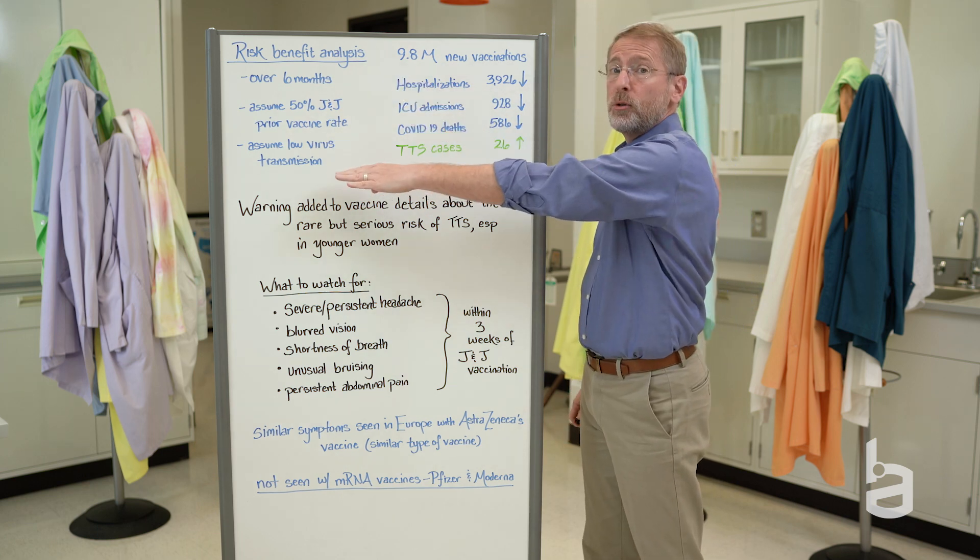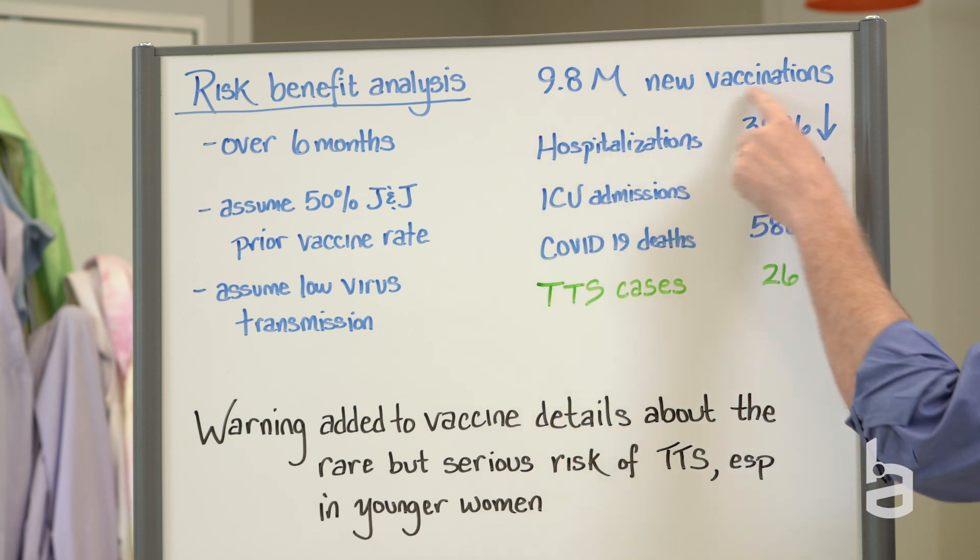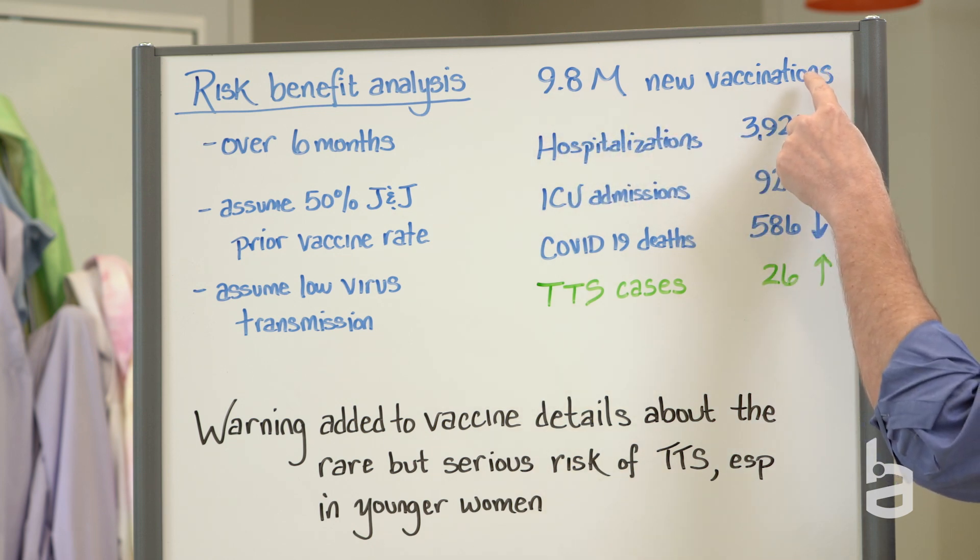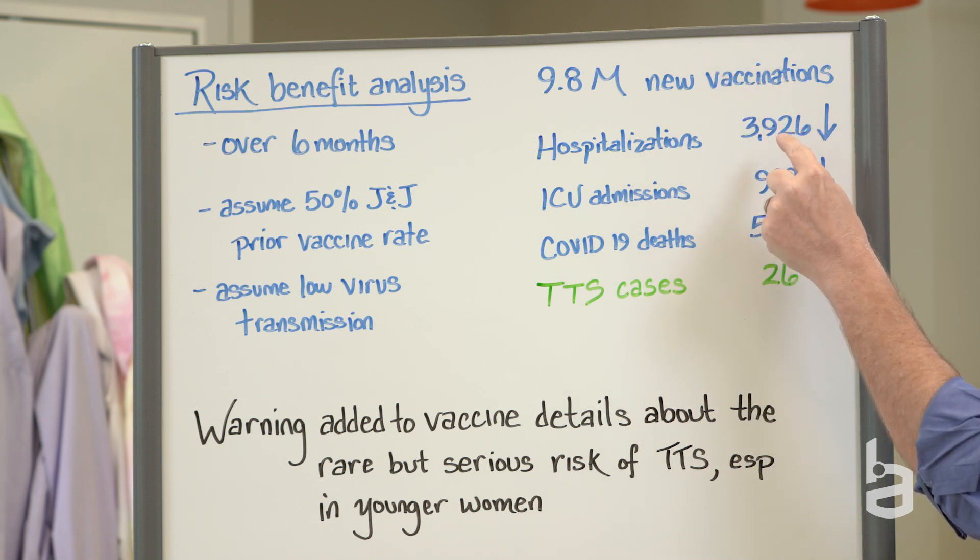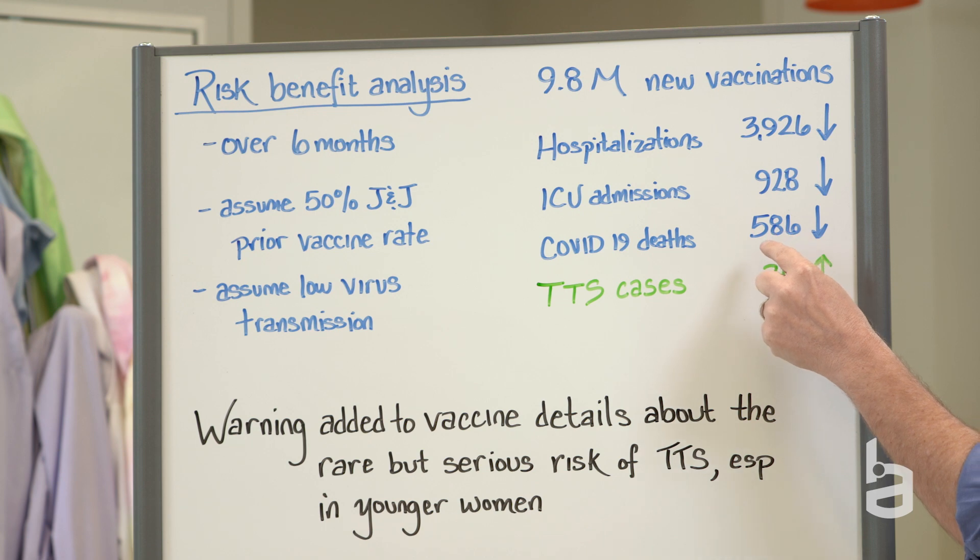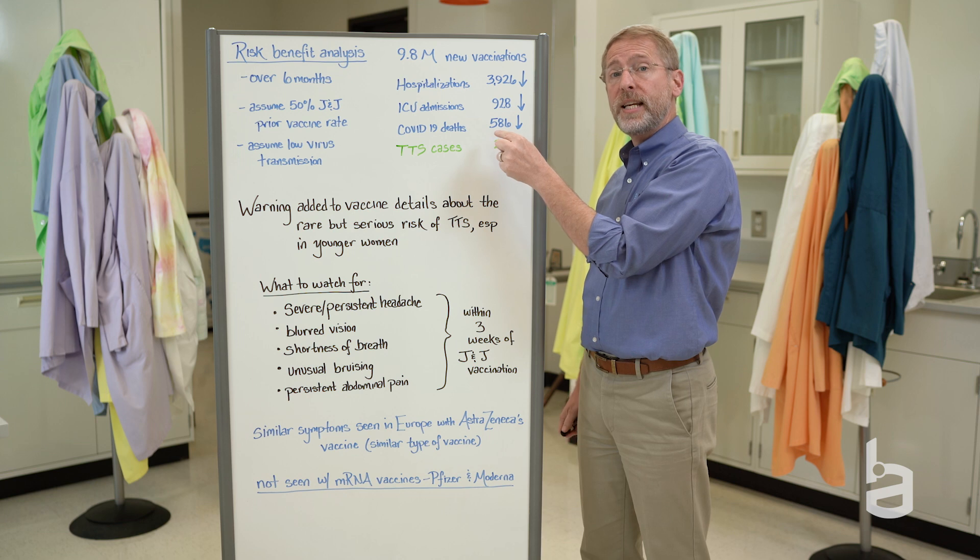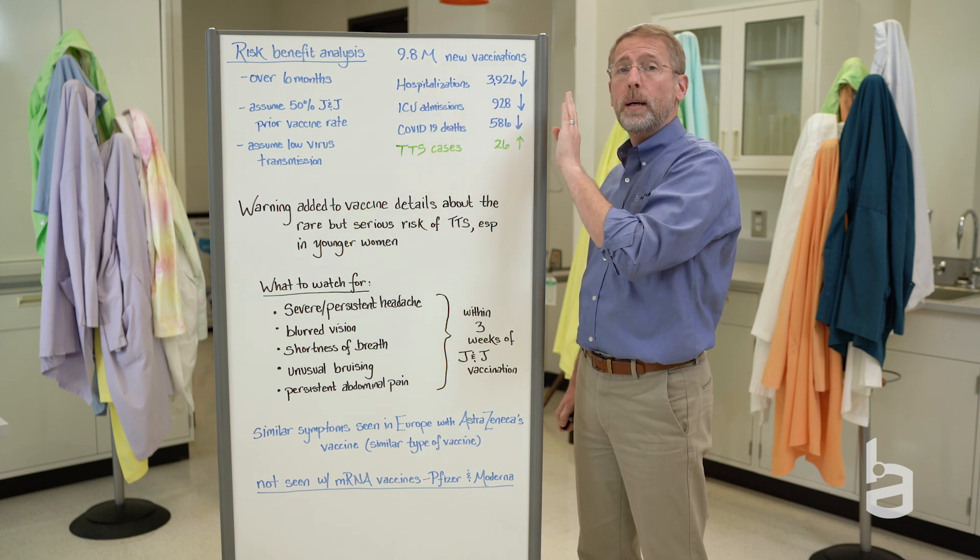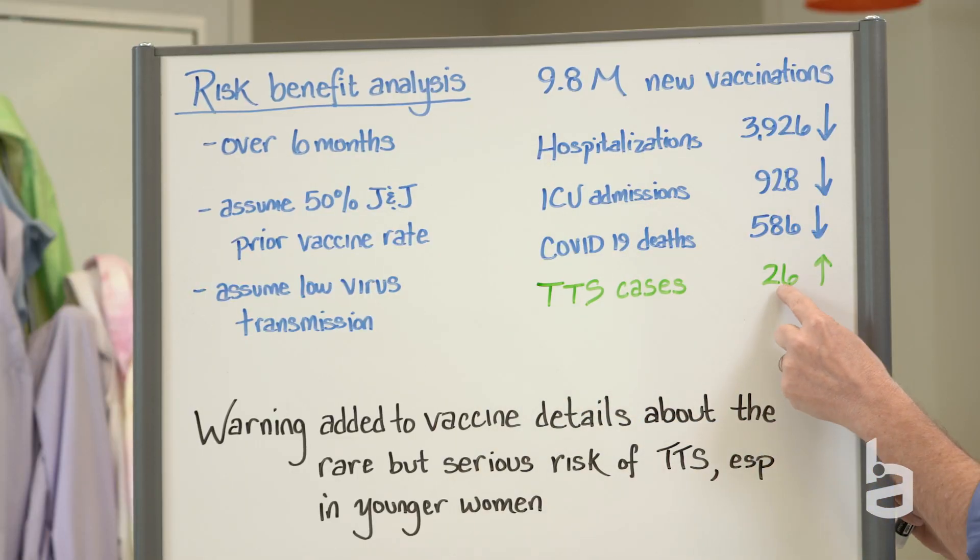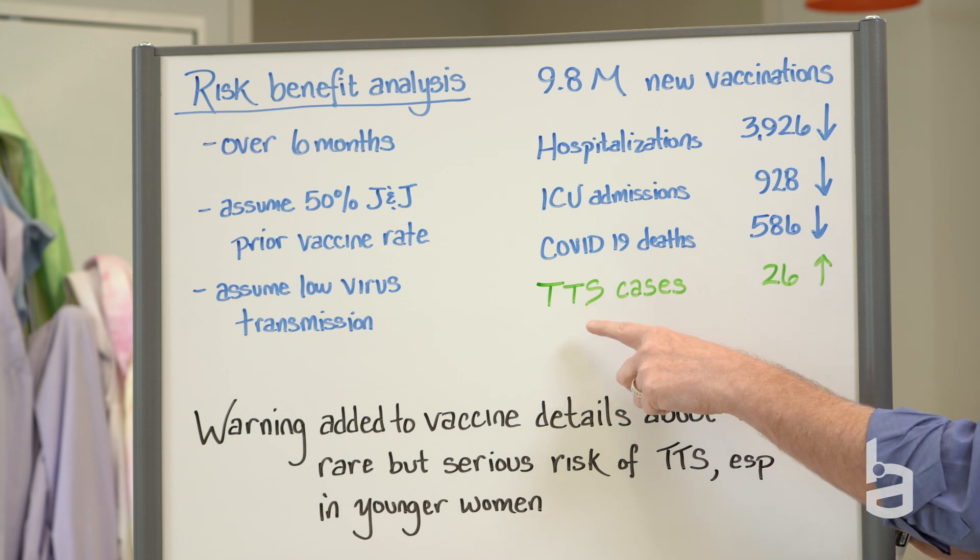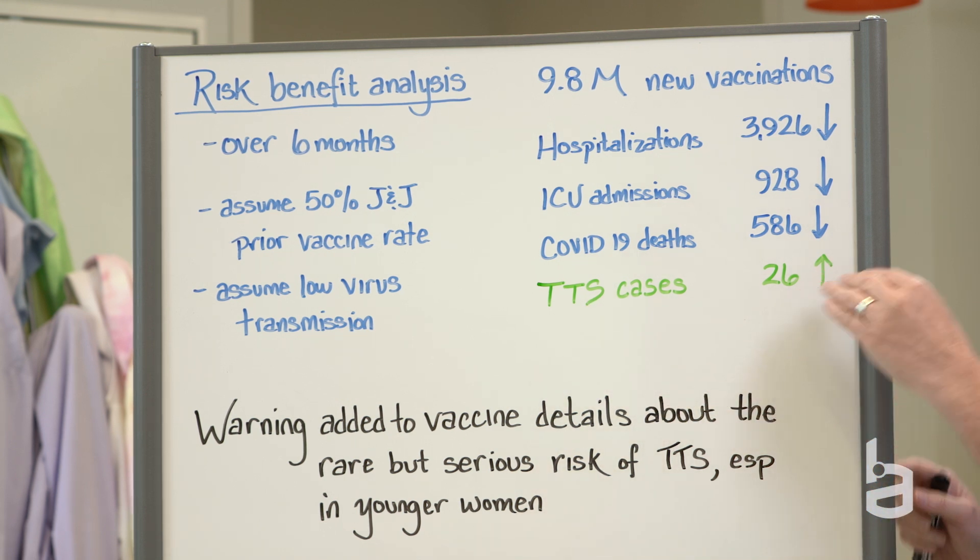But here's what this set of assumptions tells you for this risk-benefit. That would mean about almost 10 million new vaccinations across the United States. And over the next six months, that would result in a nearly 4,000 person drop in hospitalizations, dropping admissions to the intensive care unit by almost 1,000, and reducing deaths by 586. Those are the benefits of continuing and offering this to all adults age 18 and up. Now, you also would expect under those conditions that you would see 26 new cases of TTS. So a small number, but not insignificant.